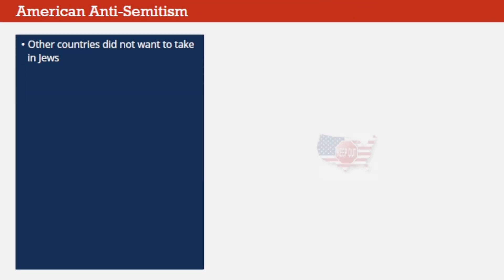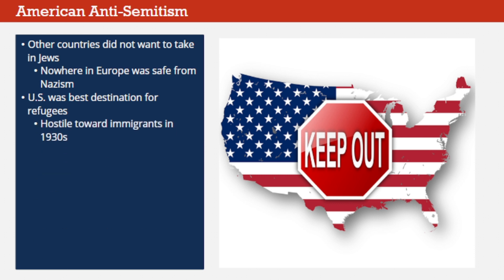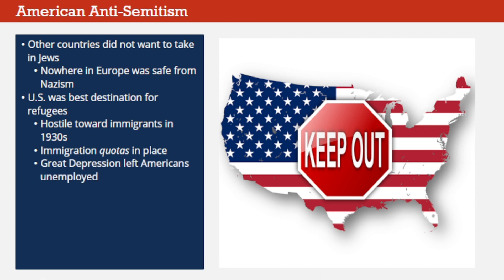There were other reasons why most German Jews stayed where they were. Simply put, other countries did not want to take them in. Nowhere in Europe was safe from the potential spread of Nazism, which left the United States as the best destination for Jews willing to become refugees. But the U.S. was hostile toward immigrants in general in the 1930s. Immigration quotas in place since the early 1920s sharply restricted the number of new Americans who could come to the U.S., limiting the numbers that could immigrate from specific nations in a given year. There was little interest in changing these policies in the 1930s. The Great Depression had left many Americans unemployed and without income for their families. If jobs were available, most believed they should go to native-born Americans and not to foreign refugees.